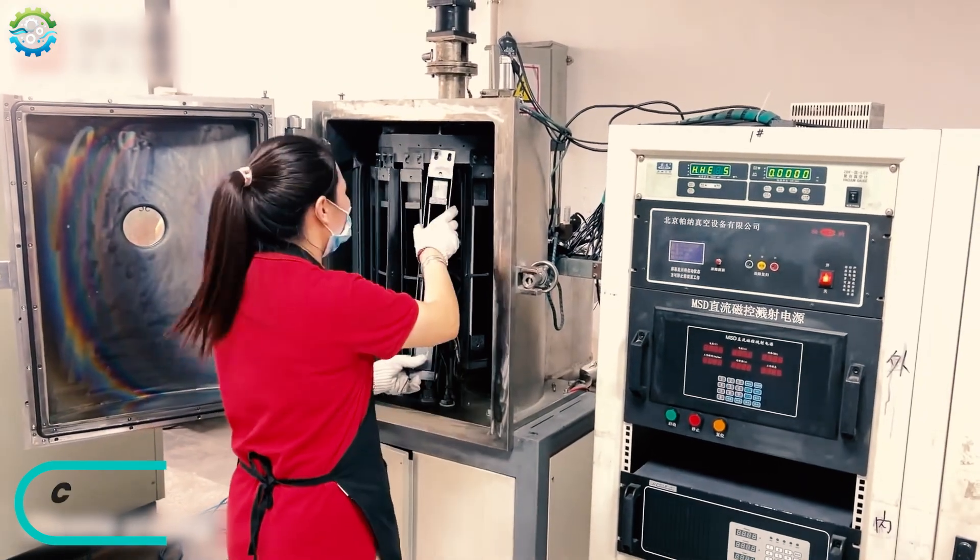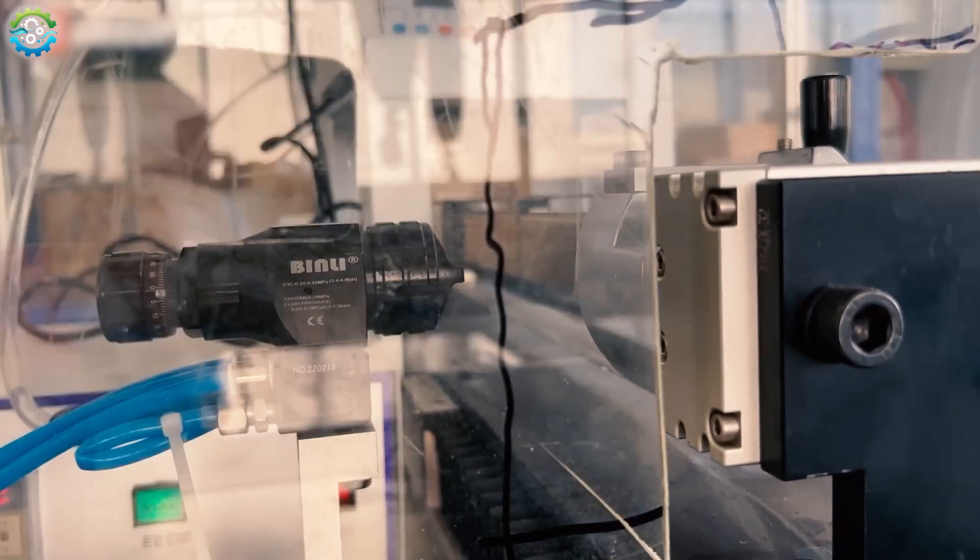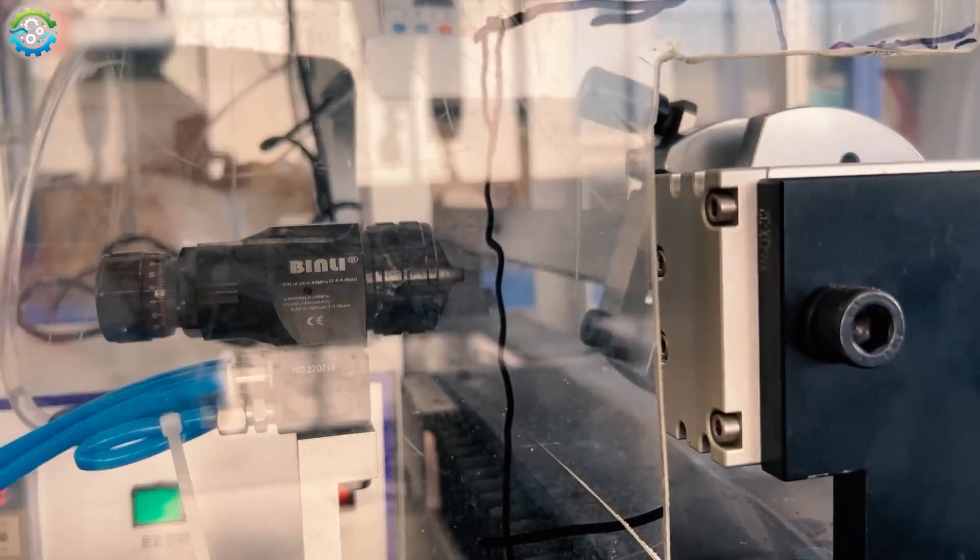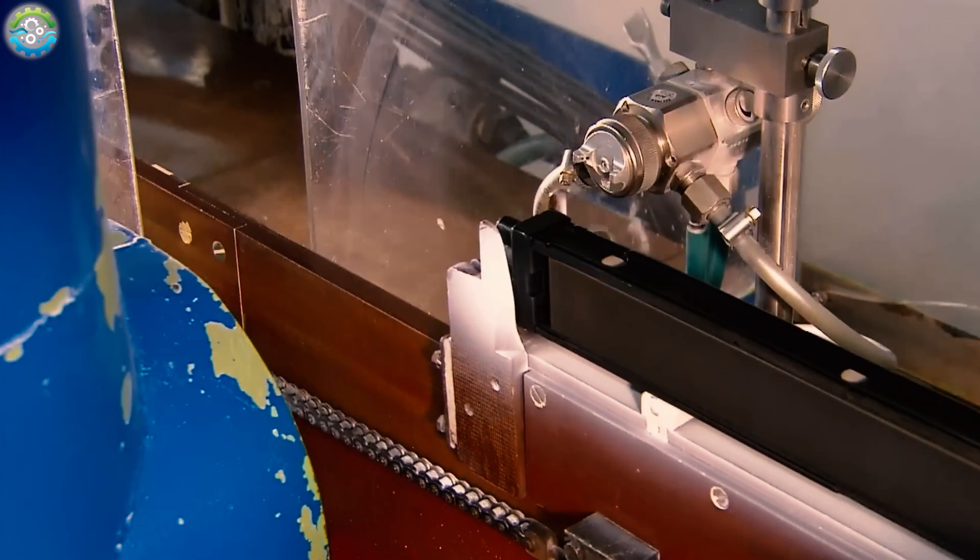The batch of blades enters a vacuum chamber, where a thin layer of chromium-based coating is applied. This coating increases the edge hardness and resistance of blades, and also prevents corrosion.